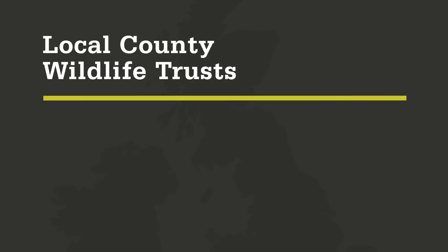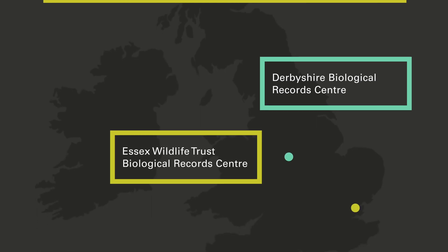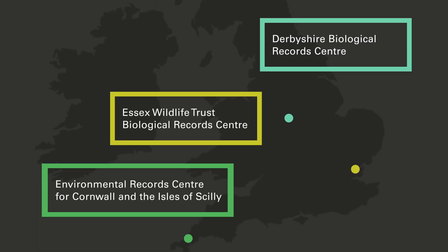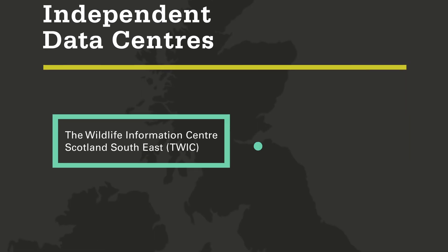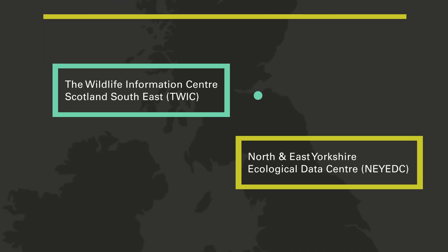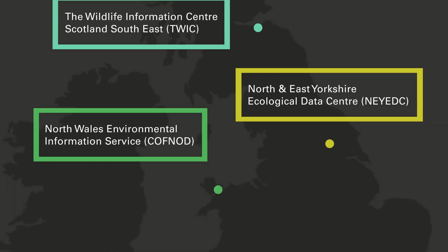The second most numerous category are those hosted by local county wildlife trusts. An example of that might be in Cornwall, where Cornwall Wildlife Trust hosts a record centre. And the third flavour, the least numerous category, are the independents. Most of those are independent charities, although they're not necessarily got charitable status. But here in York, at NYEDC, they are their own independent charity.